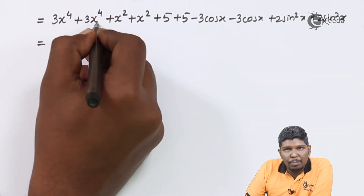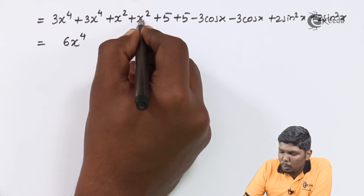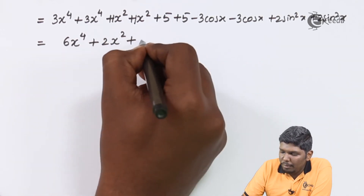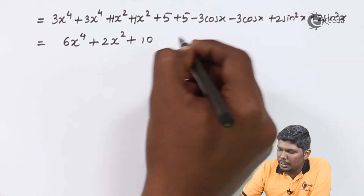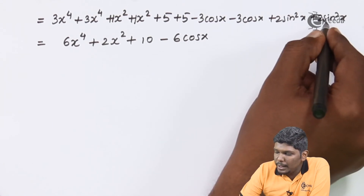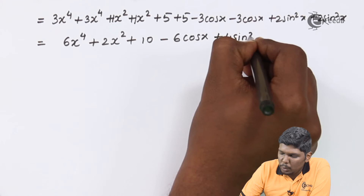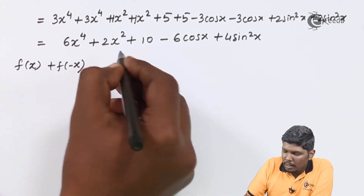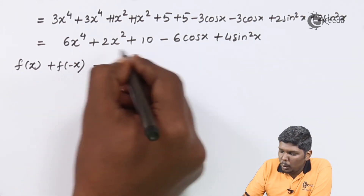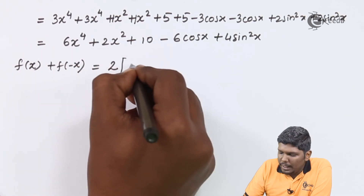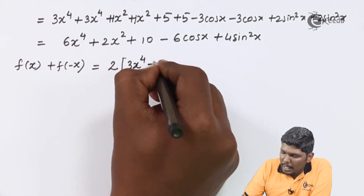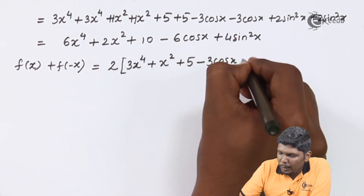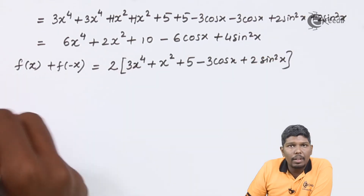So 3x⁴ plus 3x⁴ gives 6x⁴. Then x² plus x² gives 2x². Again 5 plus 5 gives 10. Minus 3cos(x) minus 3cos(x) gives minus 6cos(x). And 2sin²(x) plus 2sin²(x) gives plus 4sin²(x). Now you can see each coefficient is a multiple of 2, so take 2 as common: LHS equals 2 times (3x⁴ plus x² plus 5 minus 3cos(x) plus 2sin²(x)).